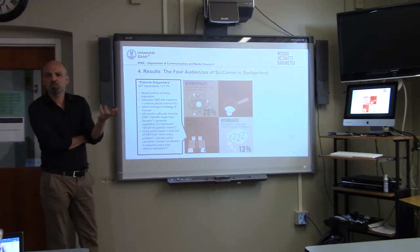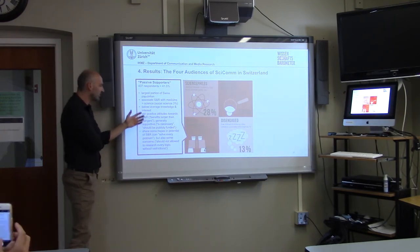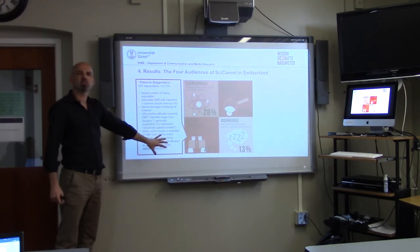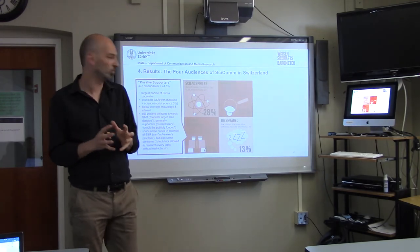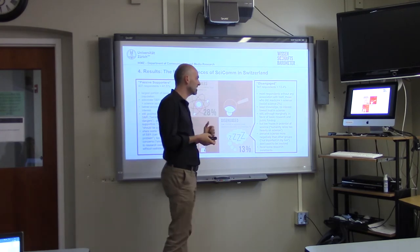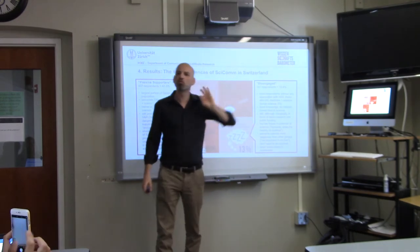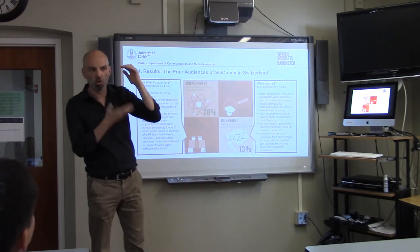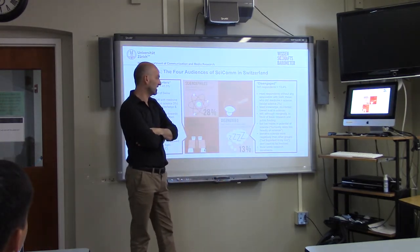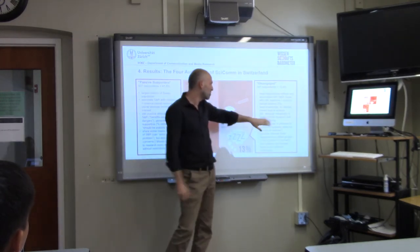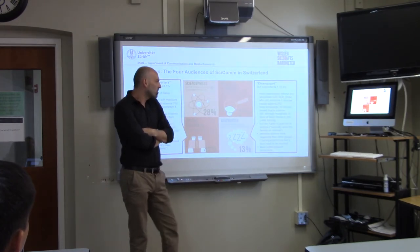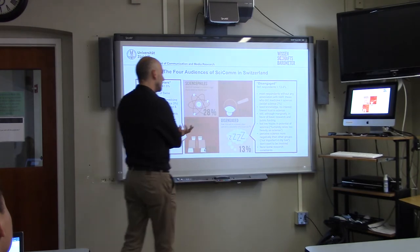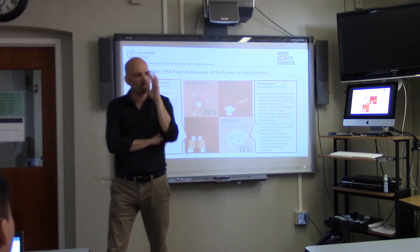The third group — the Passive Supporters — is the largest at 40% of the Swiss population. They are positive in their attitudes towards science and research, think the benefits are larger than the dangers, are generally supportive, share some hopes but also some concerns. They don't think science should be allowed to research certain issues without restrictions. The fourth group — the Disengaged — is small at 13%. They are the group with the most respondents who have no association with science when asked. They have the least knowledge, no interest, and the lowest trust in science. They still, marginally, favor basic research and public funding, but have no hopes in the potential of science — agreeing that 'humanity relies too much on science.' They favor restrictions and have very low motivation to engage.